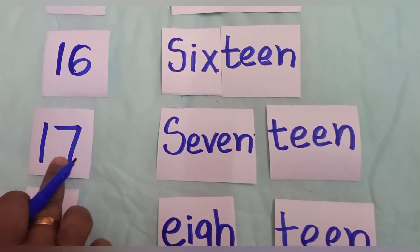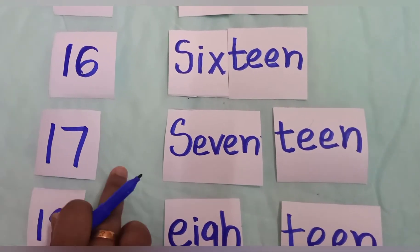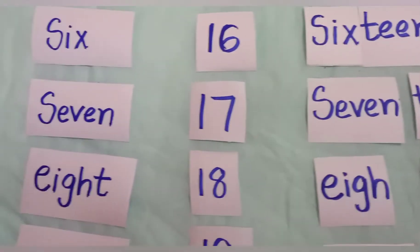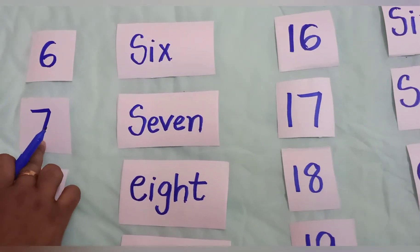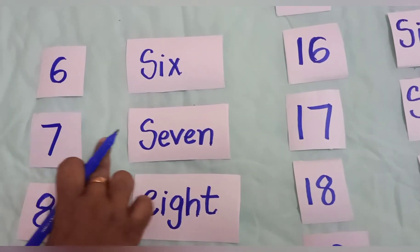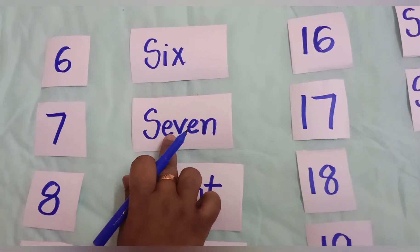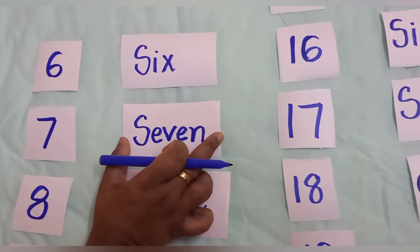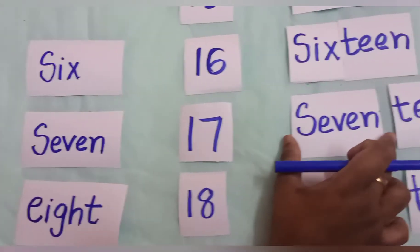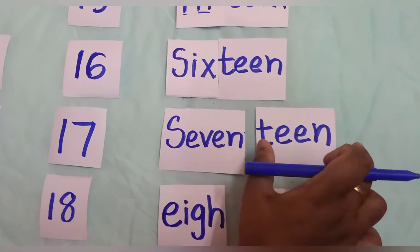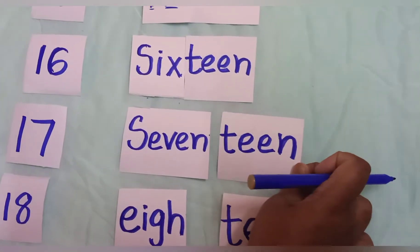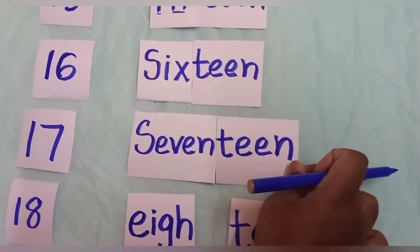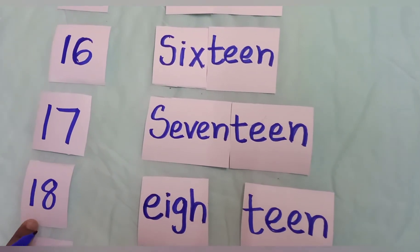Now let's see 17, written as 1 and 7. You already know the spelling of 7 — S-E-V-E-N. Write that spelling first and then join teen to get seventeen.